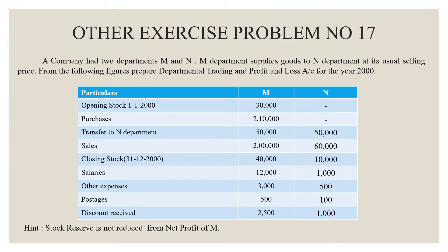Right from this problem, what are we doing here? You can transfer it to a selling price, to a stock reserve, or to a general profit and loss account. But in this problem, you transfer it to the general profit and loss account. Stock reserve is not reduced from net profit, so stock reserve has no effect.